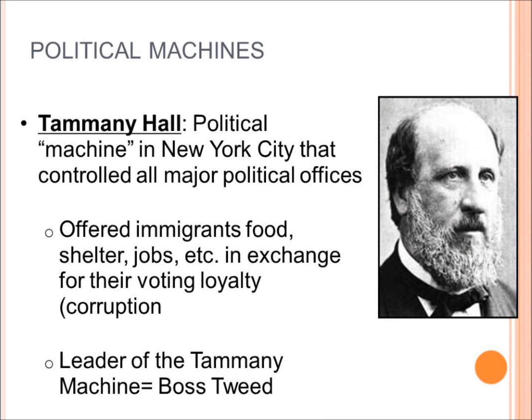The word 'political machine' refers to a political party that basically runs a city. There was a very famous one in New York City known as Tammany Hall — a political machine that controlled all major political offices. It offered immigrants food, shelter, and jobs in exchange for their voting loyalty. Obviously, this is a sign of corruption. Think about these immigrants coming off the boat with nothing, being offered food, shelter, and jobs — all they had to do was make sure they voted a certain way. This is how the people in power stayed in power; they basically bought the votes.